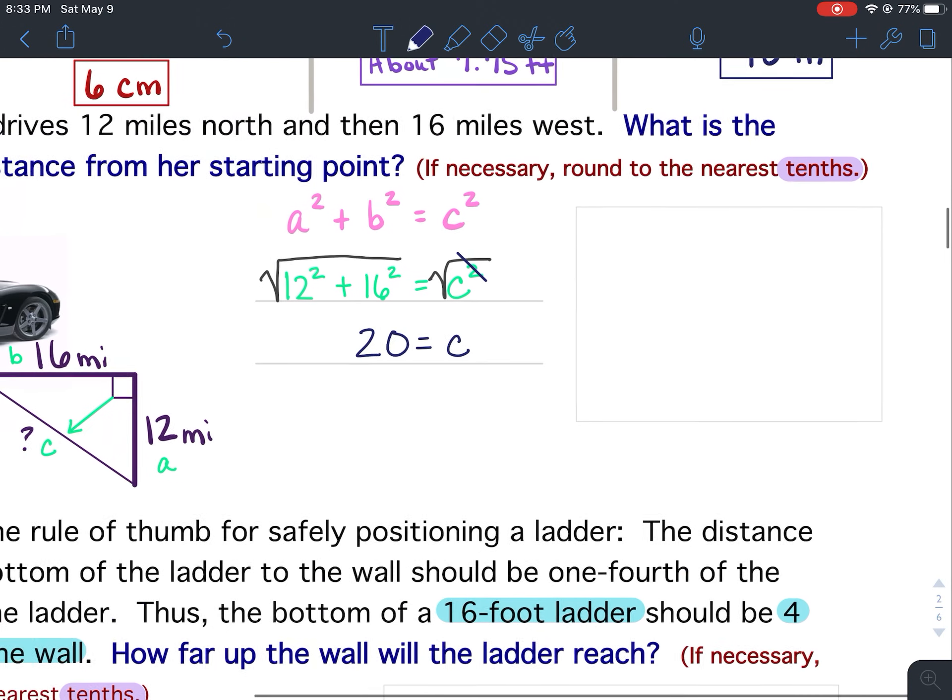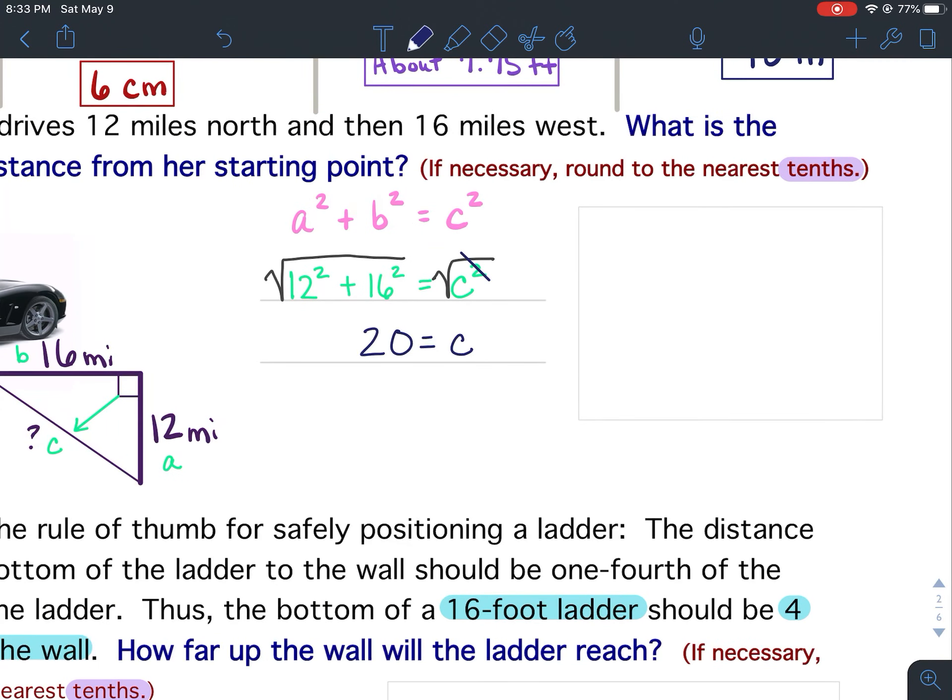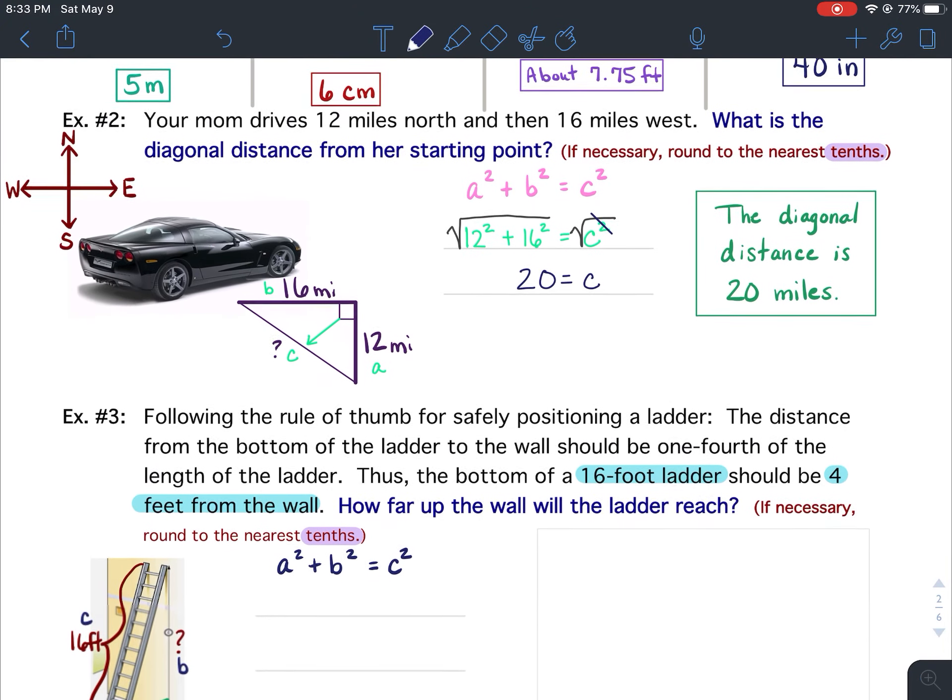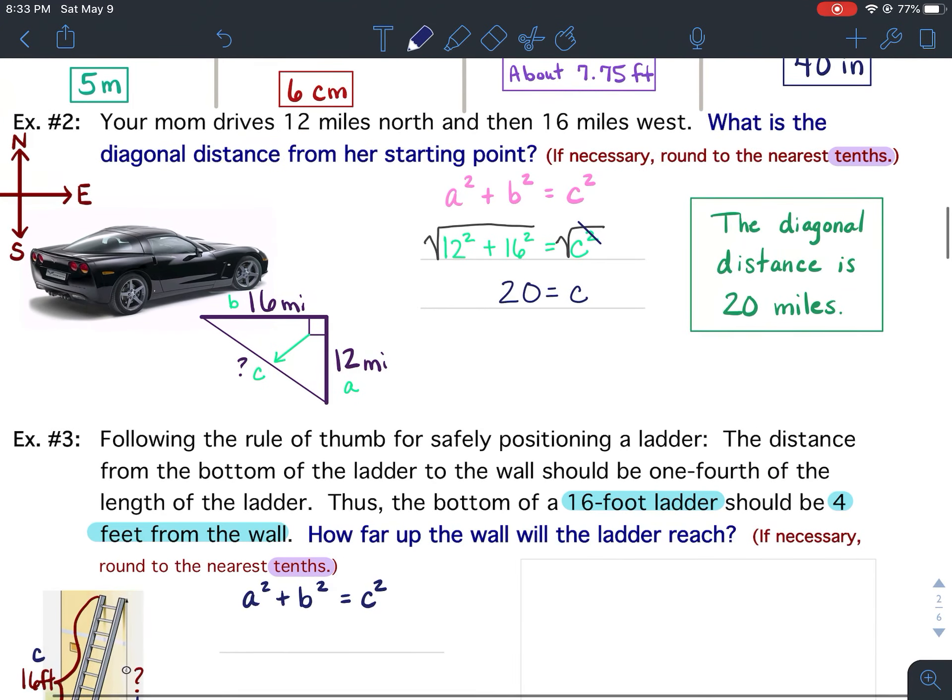Now, because this is a word problem, we need to use words or a sentence for our final answer. The diagonal distance is 20 miles. Go ahead, pause your video, make sure you have everything written down. If you have any questions on example two, please let me know.